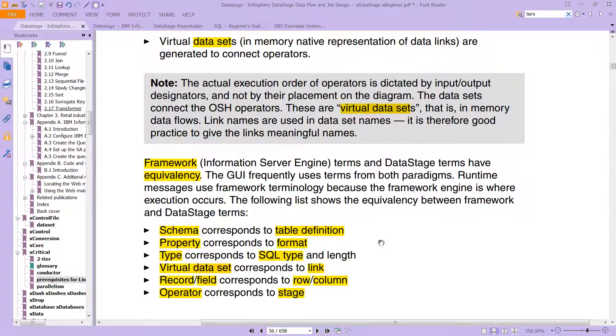And then you have virtual data sets, which corresponds to links. You have record or field, which corresponds to a row and column. Operator, which corresponds to stage.